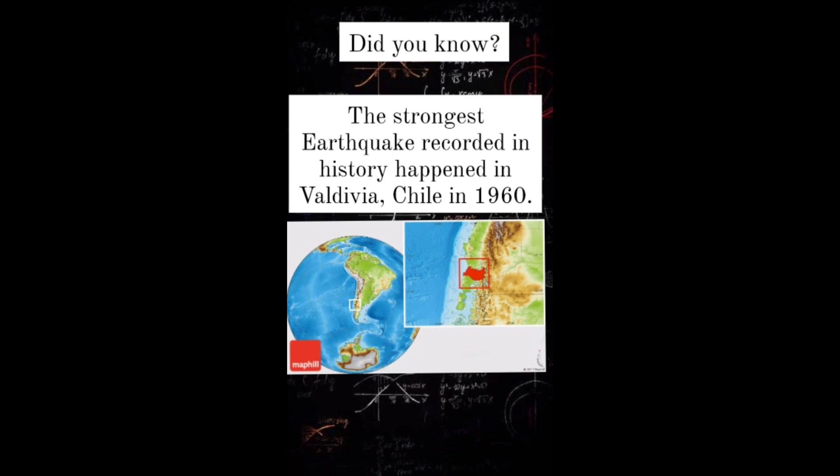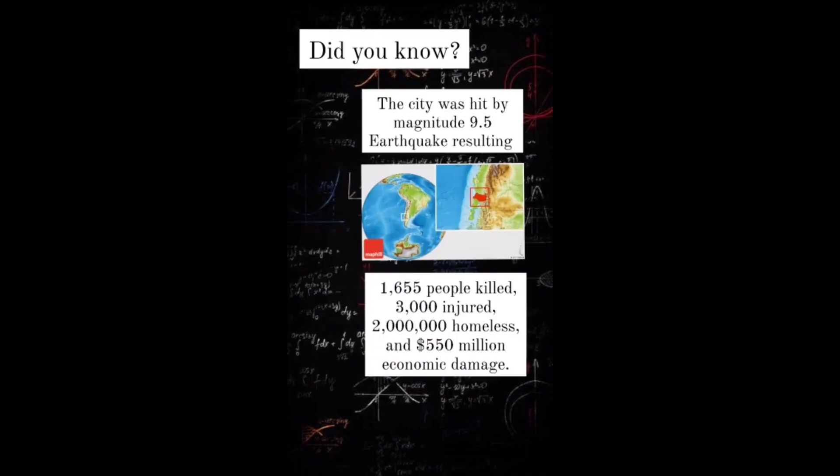Did you know the strongest earthquake recorded in history happened in Valdivia, Chile in 1960? The city was hit by a magnitude 9.5 earthquake, resulting in 1,655 people killed, 3,000 injured, 2 million homeless, and $550 million in economic damage.